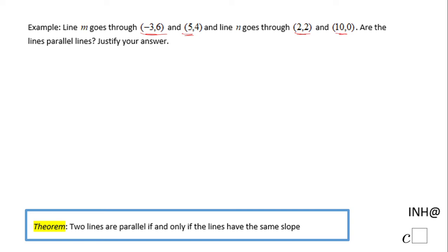We have a theorem which says two lines are parallel if and only if the lines have the same slope. So what you have to do here is calculate the slope of line m and line n.